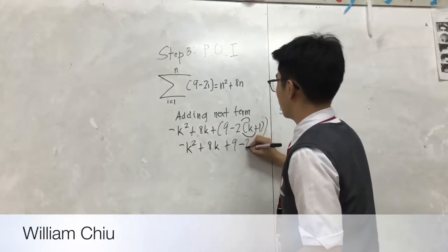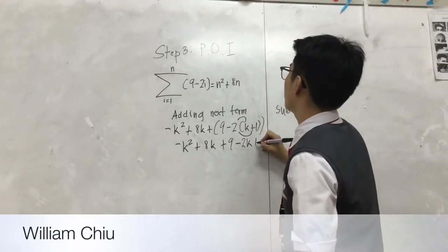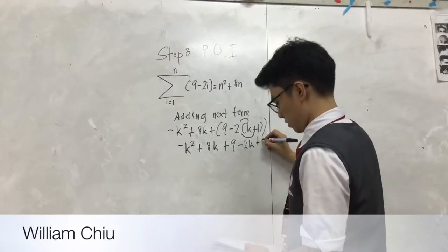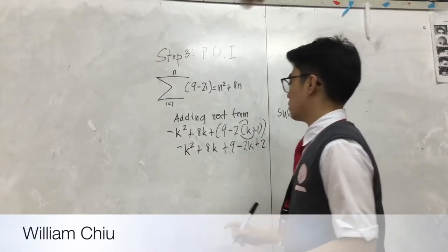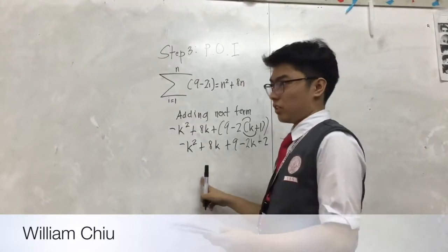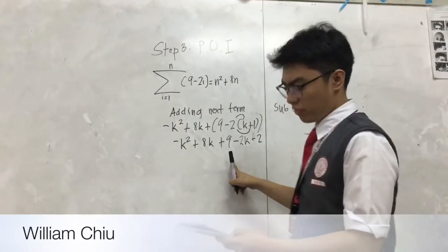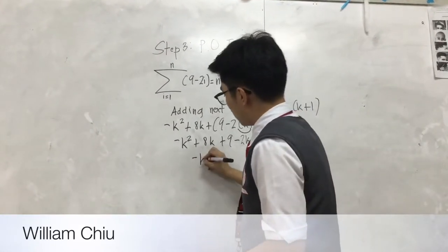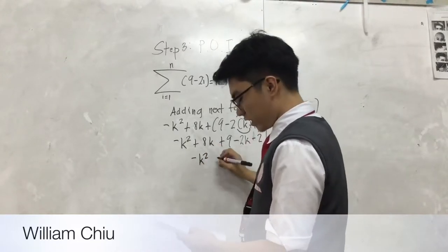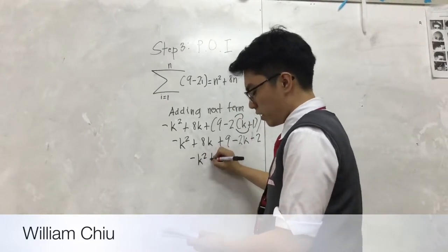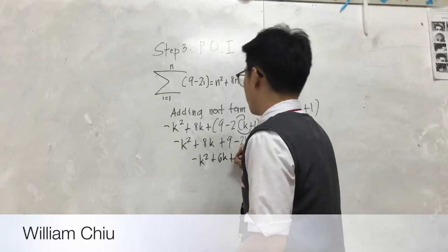Substitute this one. It will be long. Negative k... This must be simplified. The final answer for adding the next terms is negative k squared plus 6k plus 7.